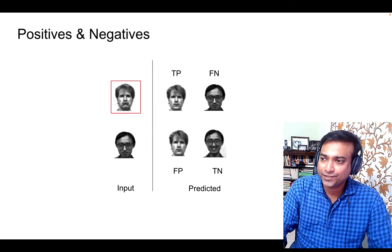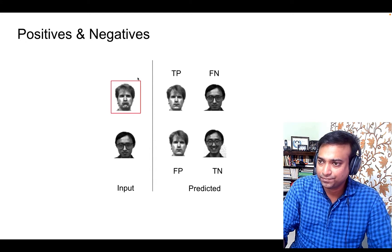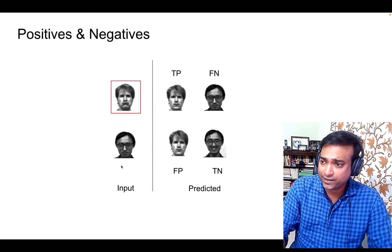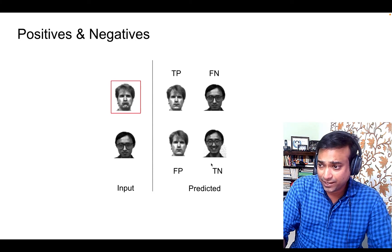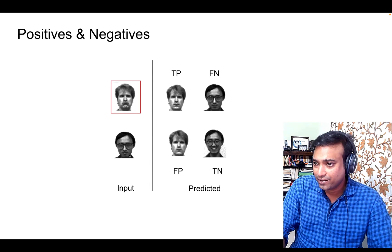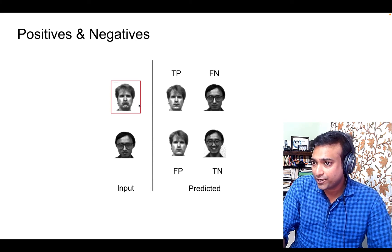Let's understand some of the basics of positives and negatives. This is our input space and this is our predicted space. The subject we are interested in is this person. When this person is checked against the system and the system predicts it correctly as the same person, then it is a true positive. If this person is identified as a different person, it's called a false negative. If altogether a different person is identified as the person in context, that's called a false positive. And if this other person is identified as himself, that's called a true negative.